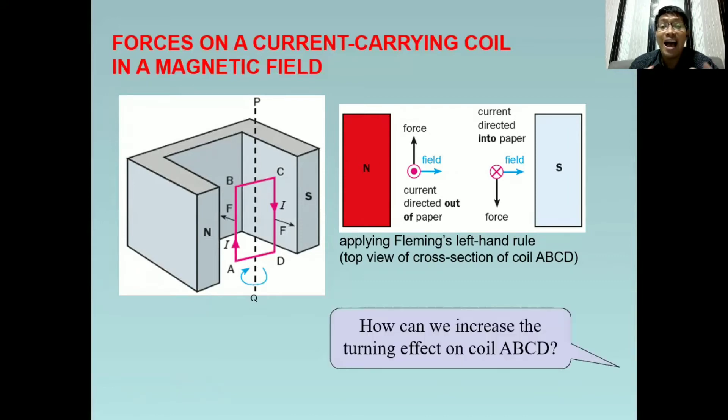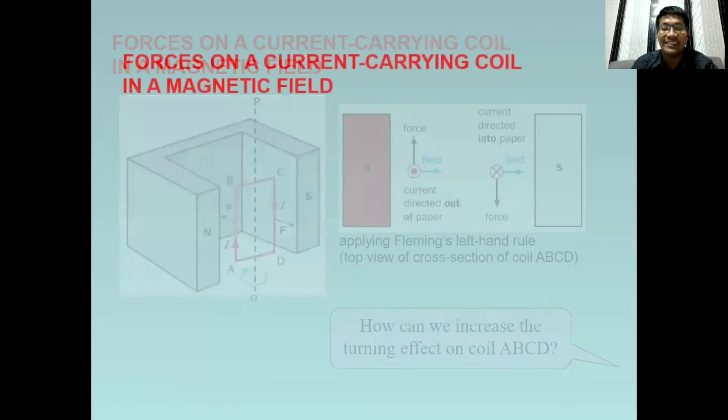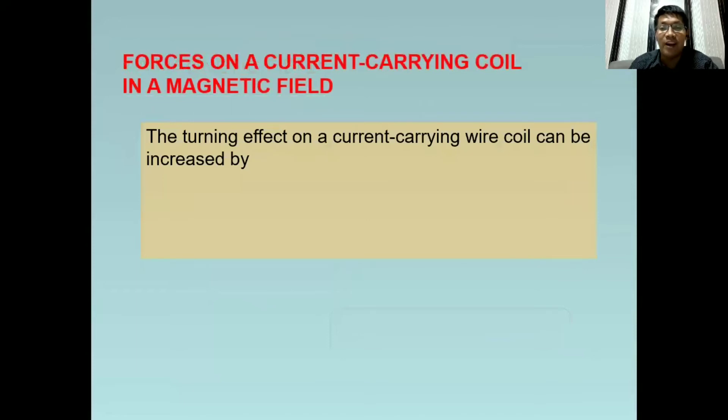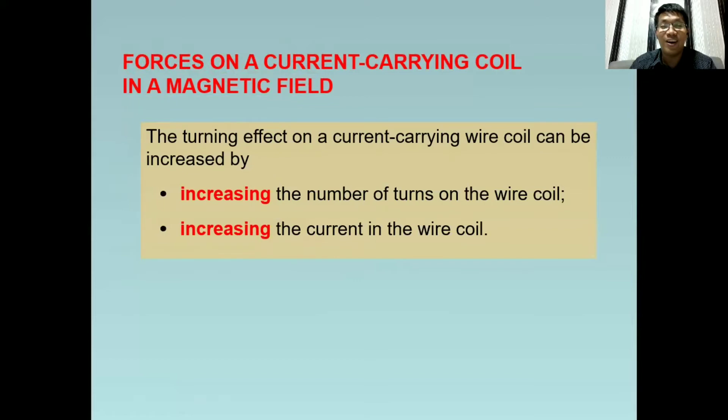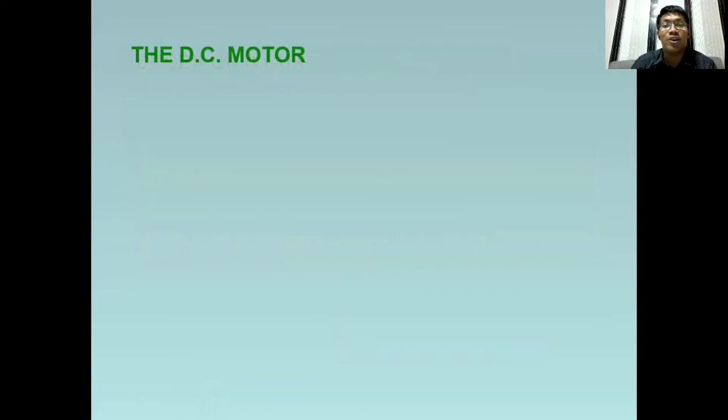How can we increase the turning effect on coil ABCD? We can increase the number of turns on the wire coil - the more turns we add, the stronger the turning effect. Second, we can also increase the current in the wire coil. What is the application of this turning effect? This is observed in what we call DC motor. DC stands for direct current.